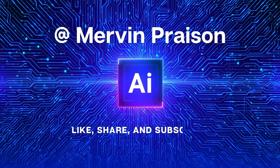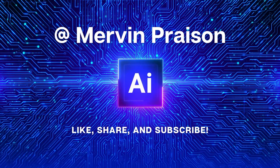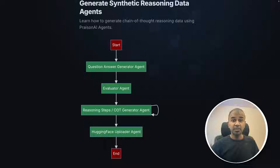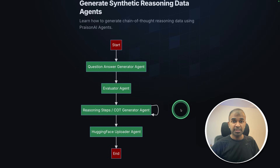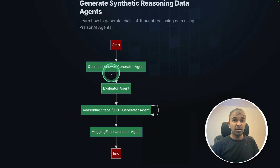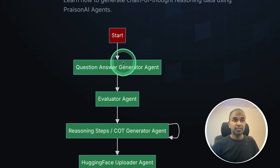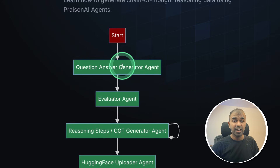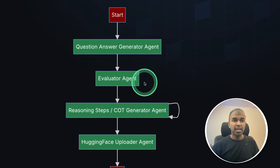Let's get started. The reason we are using AI agents is because everything is automated — we don't need to do anything manually. You can also ask the question-answer generator agent to generate based on a specific topic, or you can even feed your own data, and it will automatically generate all the question answers. The reasoning steps will also be based on that.